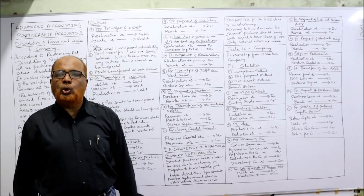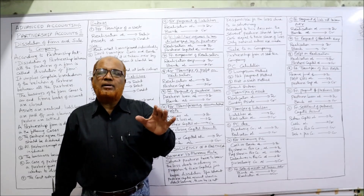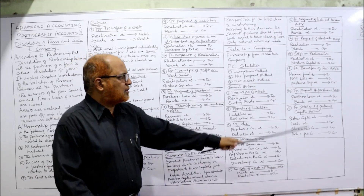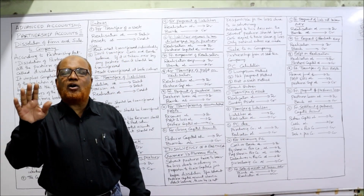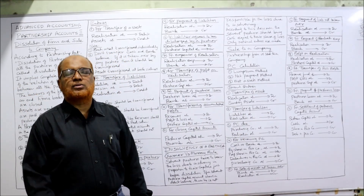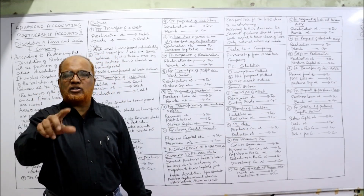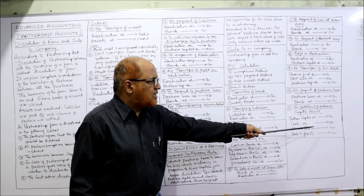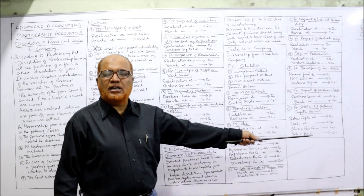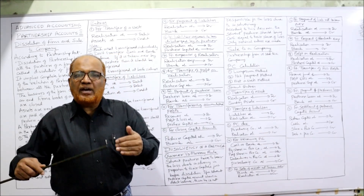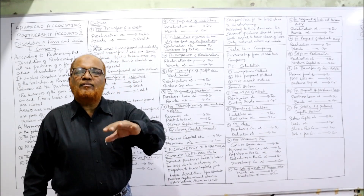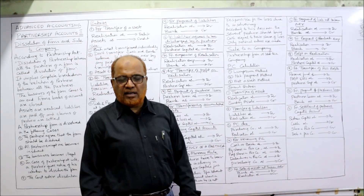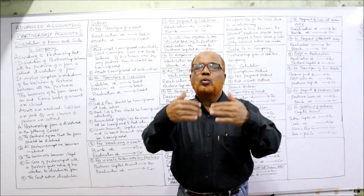For payment of partners' loan: if in the balance sheet liability side there is a partners' loan, then Partners' Loan Account debit, Bank Account credit. For settlement of partners' capital accounts: Partners' Capital Account debit, Bank Account credit, Equity Shares in Purchasing Company credit, Debentures in Purchasing Company credit. So whatever purchase consideration we have received, that PC is settled among the partners. These are all the entries on sale of a partnership firm to a company.